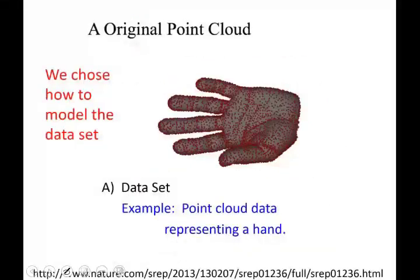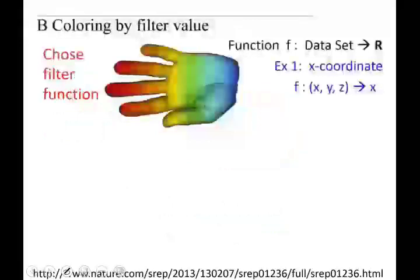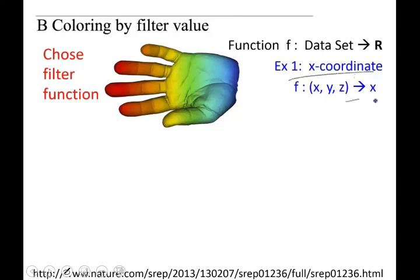One of the choices we made was how to model the data set. Often one must clean the data set — there are a number of things one must do to have a nice data set to work with. We then chose a filter function; in this particular example, it was projection to the first coordinate.